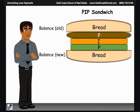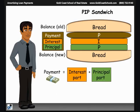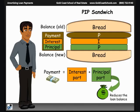The top piece of bread is the starting, or old, balance, and the bottom piece of bread is the ending, or new, balance. The middle, or PIP, part of the sandwich contains three things: P for payment, I for interest, and P for principal. You can remember that the P for payment comes first because payment comes earlier when alphabetized than principal. The payment is made up of two parts — the interest part and the principal part. Written mathematically, the payment is equal to interest plus principal. The principal is the only part of the payment that actually goes towards reducing the amount owed.